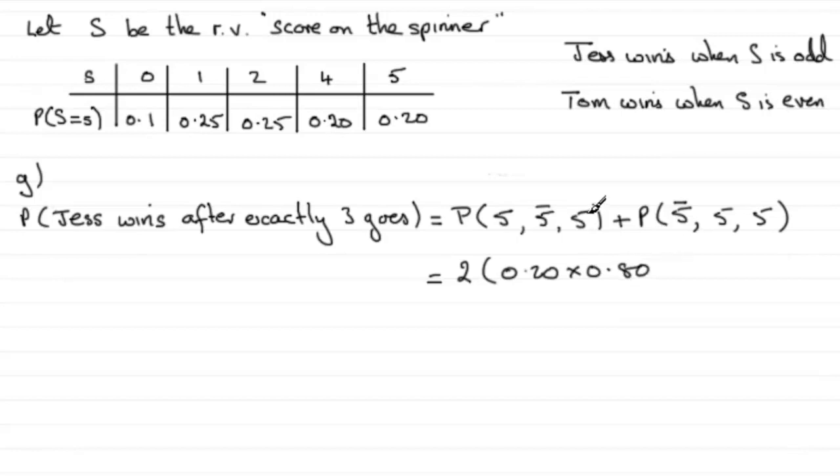And then multiply by another five, 0.20. And if we work that out, we end up with 0.064. And there you go.